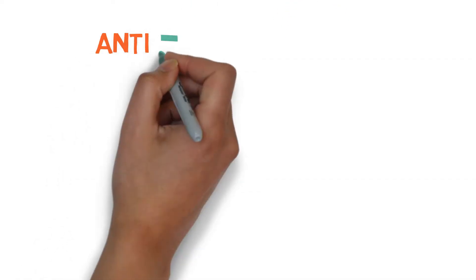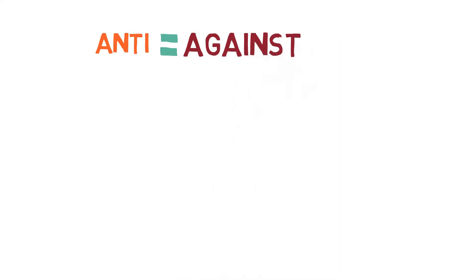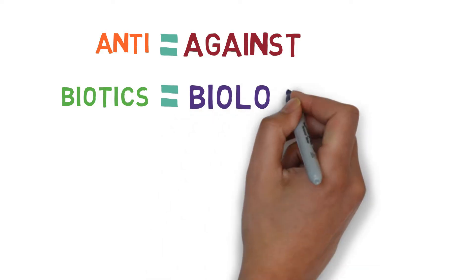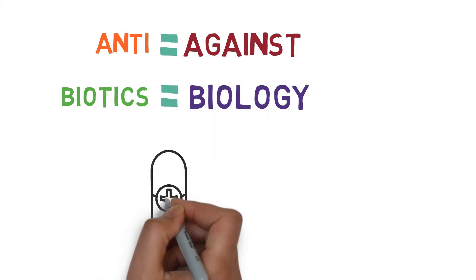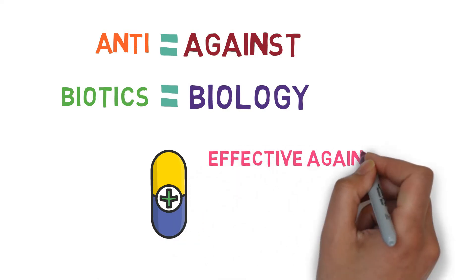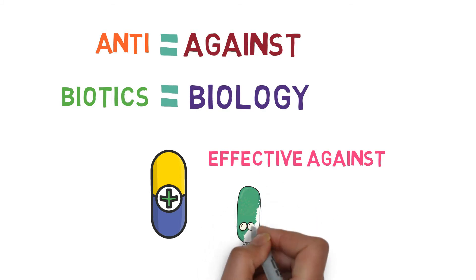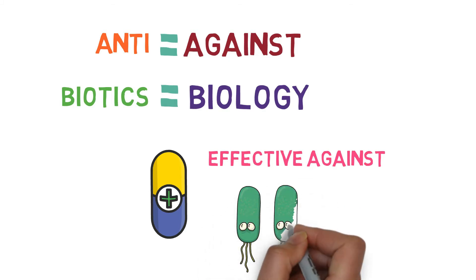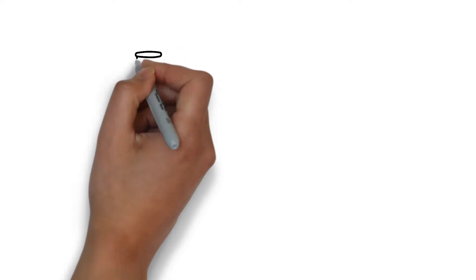Anti means that works against something, and biotics means biology, so antibiotic means chemicals that are against biology. These are very effective in killing bacterial cells, so they are only effective against pathogenic bacteria that cause infections inside the body.